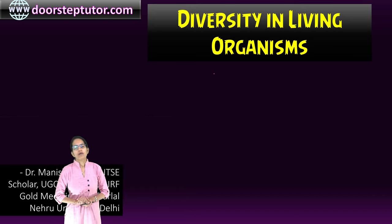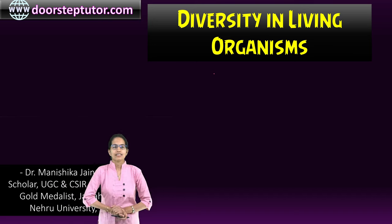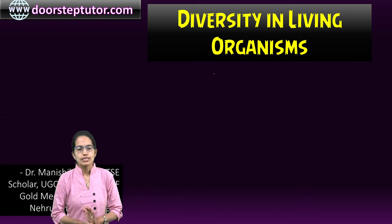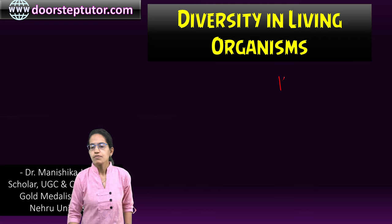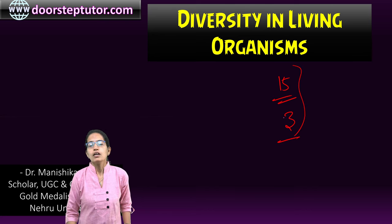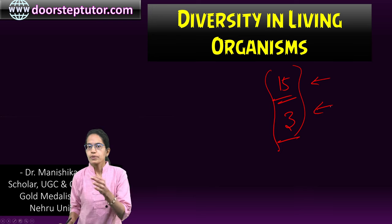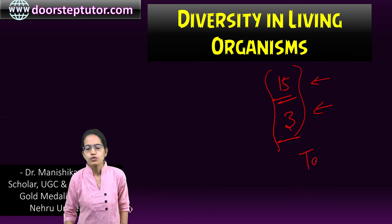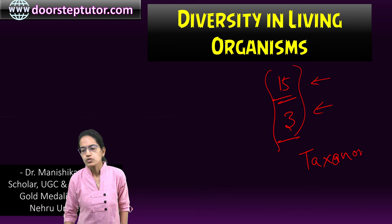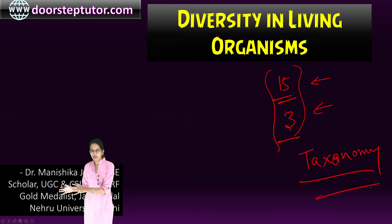Welcome. In this class we will talk about diversity in living organisms. A very interesting thing about living organisms is there are nearly 15 lakh animal species and around 3 lakh plant species which survive on planet Earth. Understanding each of these species individually becomes a problem. To simplify that, what we do is to have a taxonomy. Taxonomy is a process through which we classify similar species under one group.